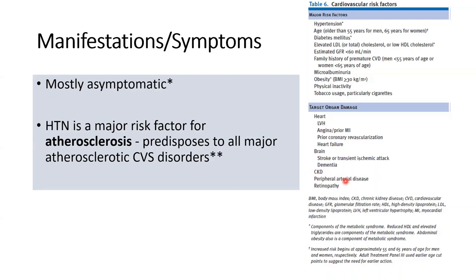Sustained high blood pressure damages the vessels of the kidney. Peripheral artery disease is also a consequence — sustained high pressure within vessels triggers more deposition of fat in the wall and challenges the elasticity of arteries long-term, leading to quicker decrease in their elastic profile. Retinopathy is another outcome — atherosclerosis of the retinal vessels leads to ischemia of the retina and changes in vision.